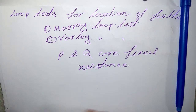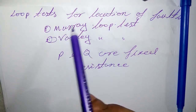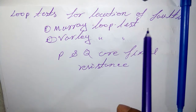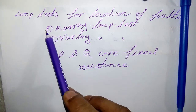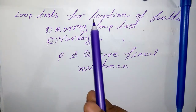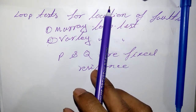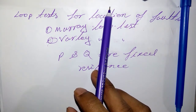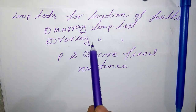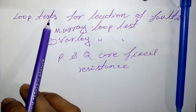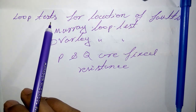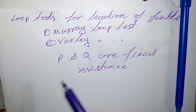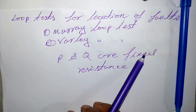So those are the loop tests for location of faults: Murray Loop Test and Varley Loop Test. In the loop test, both earth fault and short circuit fault can occur. Thank you everyone. See you in the next video.